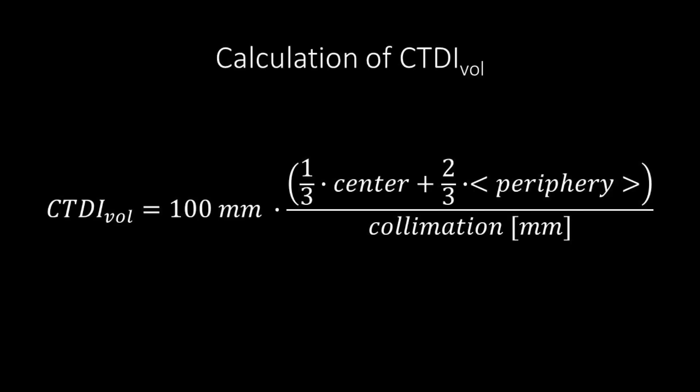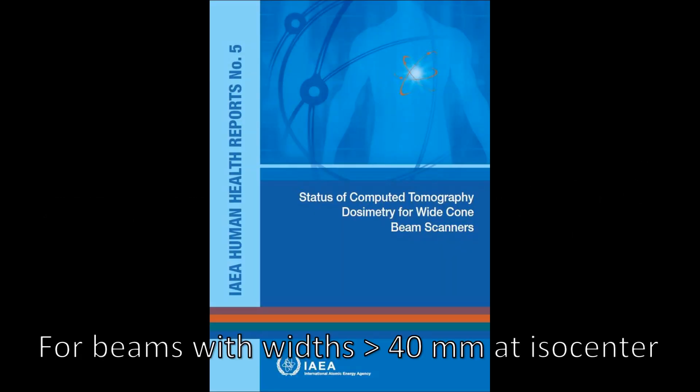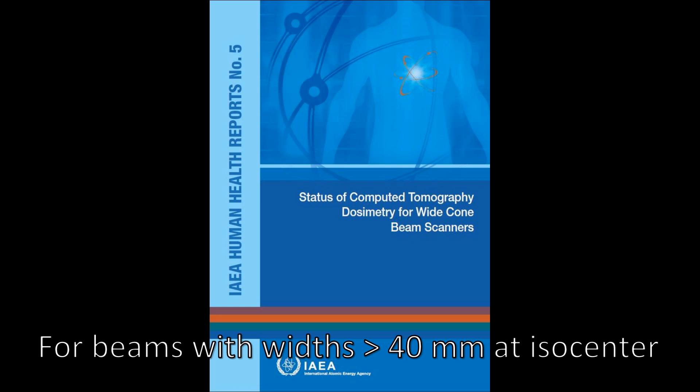The volume CTDI is obtained by adding 1 third of the center dose and 2 thirds of the average periphery dose, dividing the total by the nominal beam collimation and multiplying everything by 100. For beams with widths at isocenter over 40 mm, use a system for free in air CTDI measurement.